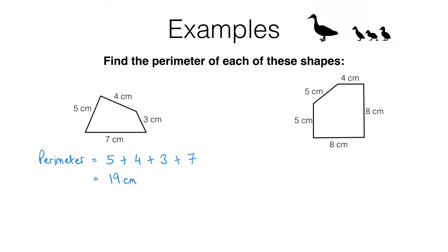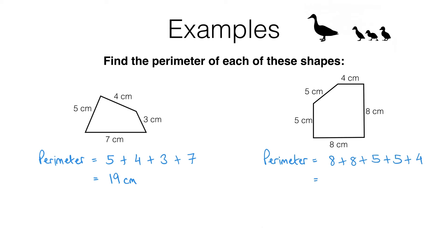So that is the distance all the way around this shape. Moving on to the second shape, the perimeter is 8 plus 8 plus 5 plus 5 plus 4. And when I add those up, I get a total of 30 centimeters.